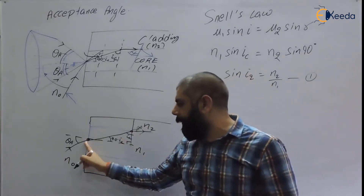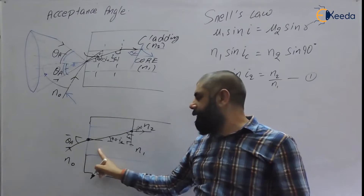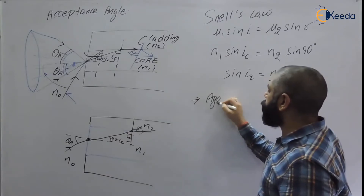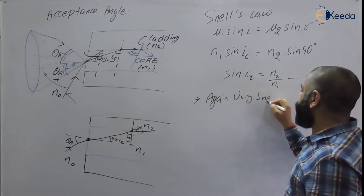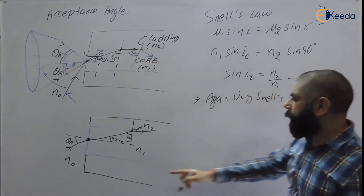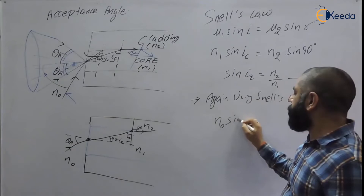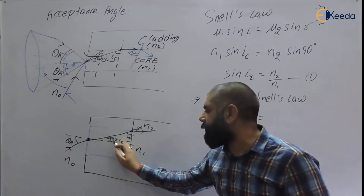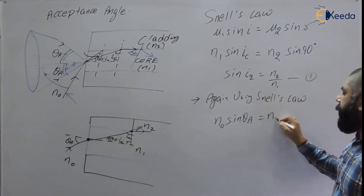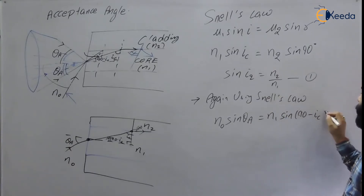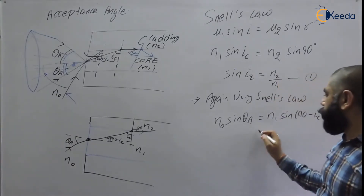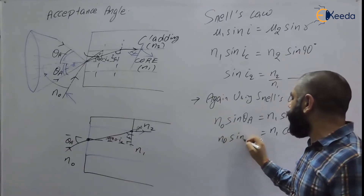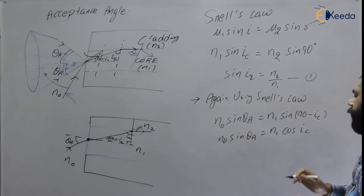Now applying Snell's law again at the input point, where the outside medium has refractive index n0 and the core has refractive index n1: n0 × sin(acceptance angle) = n1 × sin(90° − ic). Since sin(90° − θ) = cos(θ), this simplifies to: n0 × sin(acceptance angle) = n1 × cos(ic).